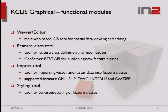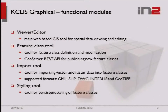The KG application offers several key functions. The main component is the viewer/editor for spatial data viewing and editing. There is a feature class tool that enables defining new feature classes and importing data, using the GeoServer REST API to publish them. We have an import tool supporting GML, Shapefile, DWG, Interlis, and GeoTIFF for raster data. Finally, there is a styling tool for dynamically styling geometries on the client side.